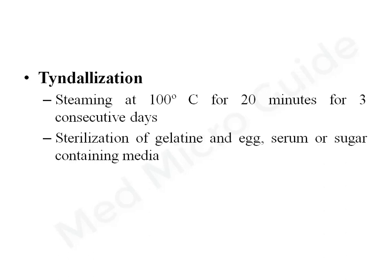Steaming is also a method of fractional sterilization, similar to inspissation. It differs only in the temperature at which we heat the article — inspissation was done at 80 to 85 degrees Celsius, whereas here the articles are kept in the steamer at 100 degrees Celsius for 20 minutes on 3 consecutive days. The principle is similar to that of inspissation.